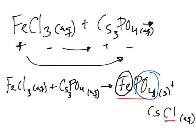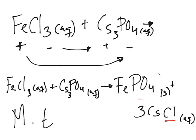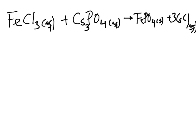Now we want to make sure this equation is balanced. We have FePO₄ as a solid. We check: one iron on each side, three chlorides on the reactant side — so we put a 3 in front of CsCl. One phosphorus on each side, four oxygens on each side. The equation is balanced. This is our molecular equation.